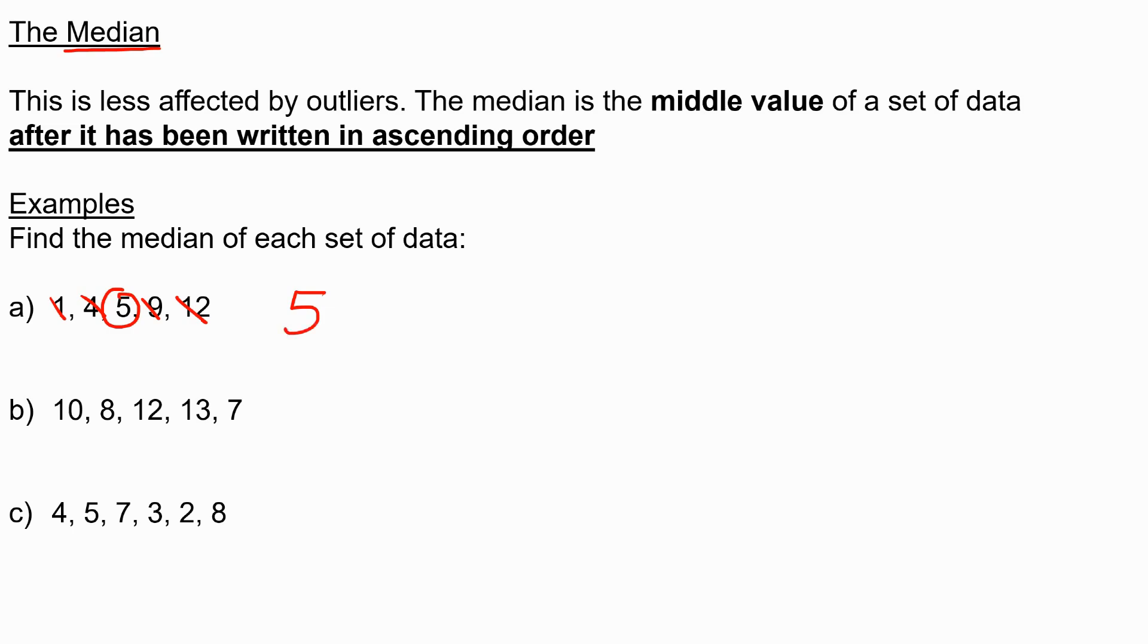In the second set of values, we need to actually put them in order. So we have 7, 8, 10, 12, and 13. And again, cross off the ends to work our way in. And we have 10 as the median.